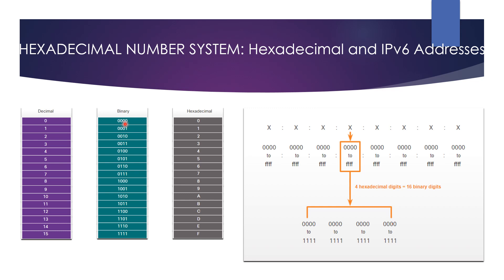IPv6 addresses are not case sensitive and can be written in lowercase or uppercase. The preferred format for writing IPv6 is where each X consists of four hexadecimal values. When referring to eight bits of an IPv4 address we use the term octet, but in IPv6 we use the term hex tet — an official term referring to a segment of 16 bits or four hexadecimal values. Each X is a single hex tet with 16 bits of four hexadecimal digits.